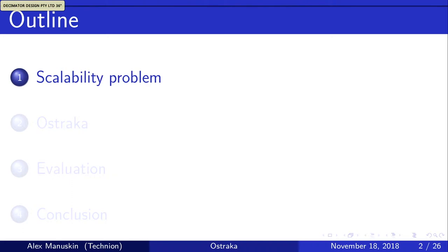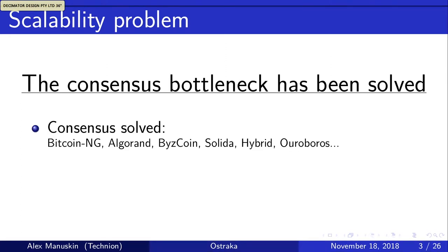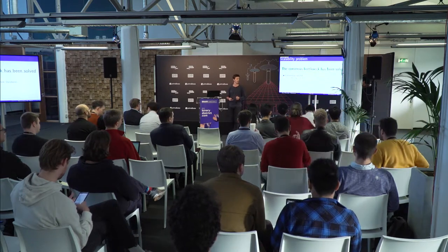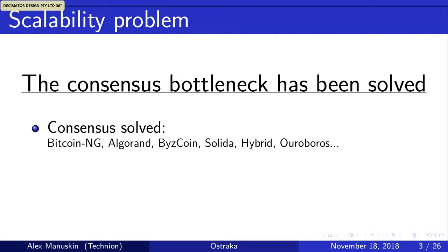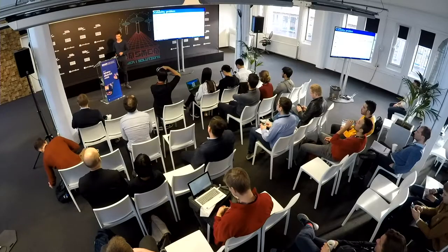Let's talk about the scalability problem. Current blockchains don't scale well, and one of the reasons is the consensus problem. Many smart people got together and came up with solutions — whether it's Bitcoin-NG, which decouples leader election from block creation, or BFT protocols that enable consensus on many transactions fast. While this happens, we're starting to see new bottlenecks: nodes still need to process, store, and propagate transactions across the network.